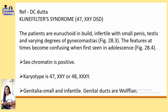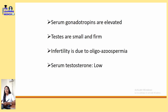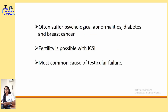In Klinefelter syndrome, the karyotype is 47XXY. The patients are eunuchoid, infertile, with small penis and testes, and varying degree of gynecomastia. The features at times become confusing when first seen in adolescence. Sex chromatin is positive, karyotype is 47XXY. Genitalia are small, genital ducts are Wolffian, serum gonadotrophins are elevated, testes are small and firm, infertility is due to oligospermia, and serum testosterone is low. Patients often suffer psychological abnormalities, diabetes mellitus, and breast cancer.